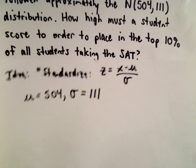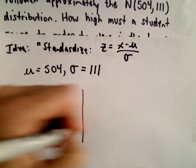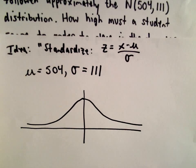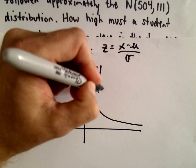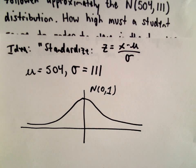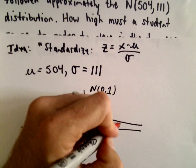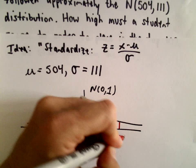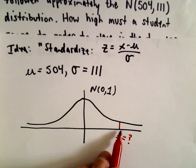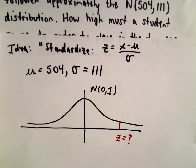Now the idea is after we standardize, so there's our normal distribution, normally distributed with a mean of zero and a standard deviation of one. What we're looking for is that particular z-score that's going to put us in the top 10%.